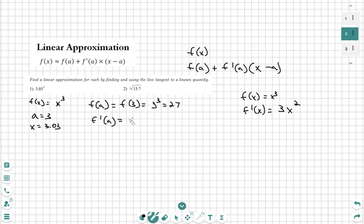So now I need to plug in f of a into that, which is f prime of 3. And we will plug in 3 times 3 squared, which will also get us 27.